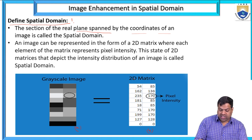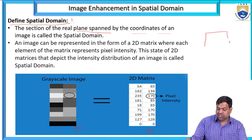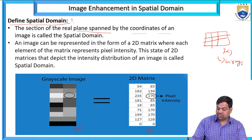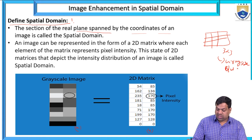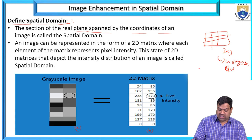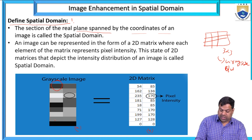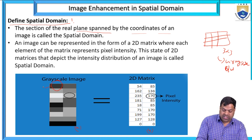Grayscale to 2D matrix: grayscale means black and white pixels. I am taking a 3 by 3 image. These pixels have intensity levels. Suppose this pixel is completely black — maybe it is 127 or 120. Here a whitish pixel has intensity 235.